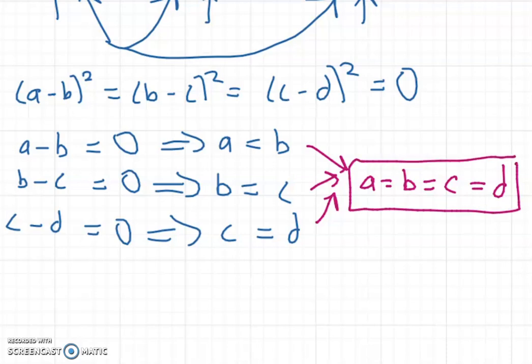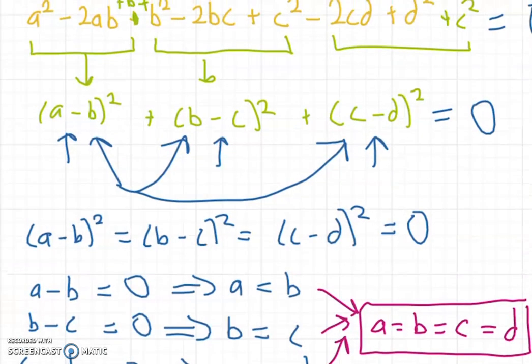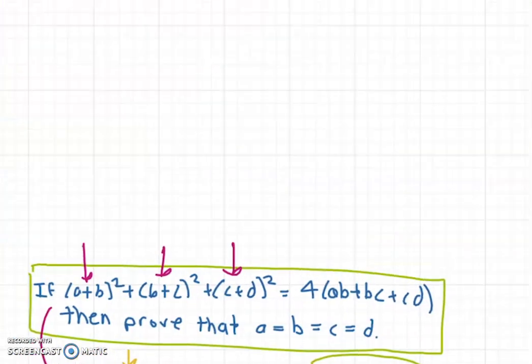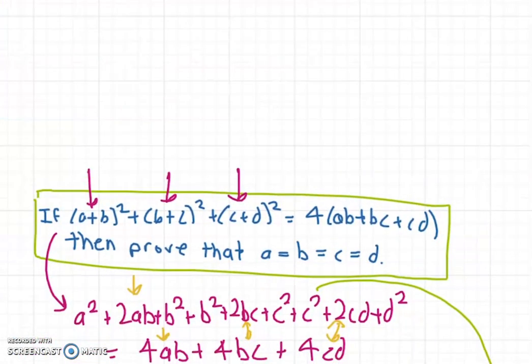And a equals b equals c equals d is what we had to prove originally. So we've successfully proven that a equals b equals c equals d. That concludes the proof.